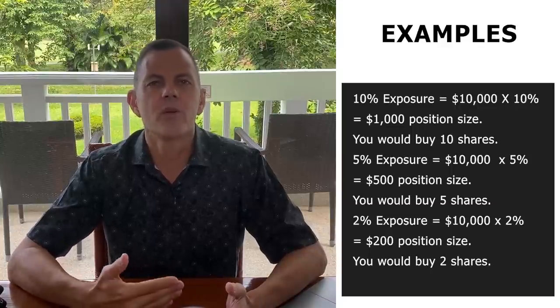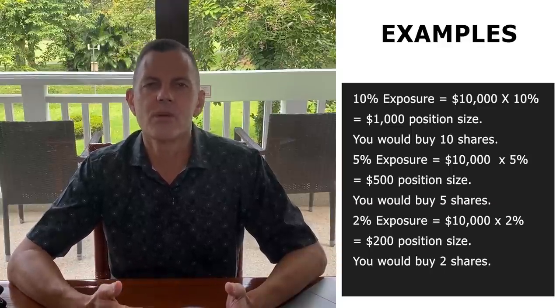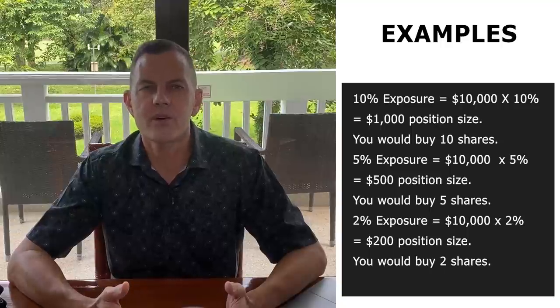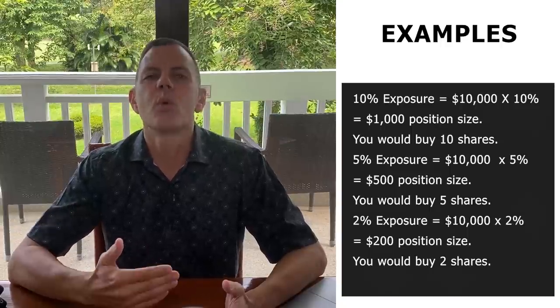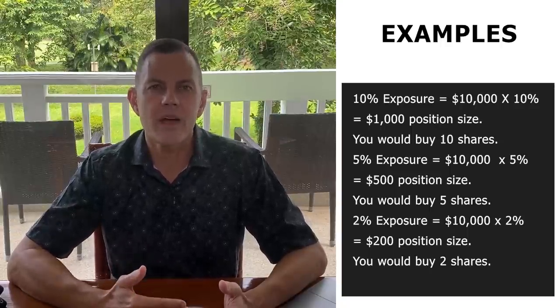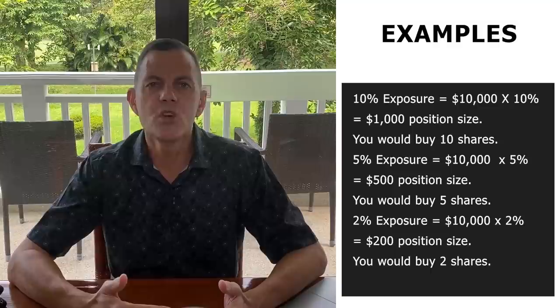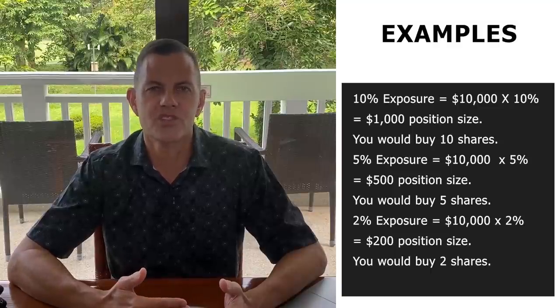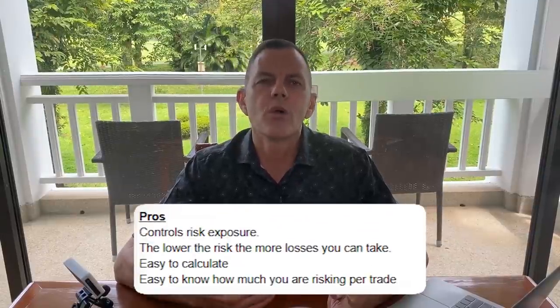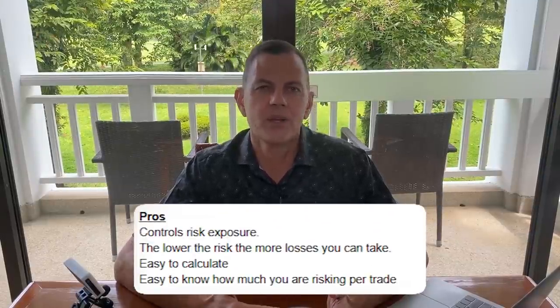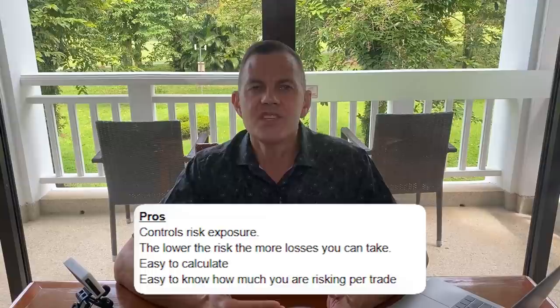For 5% exposure, that would be $10,000 × 5% = a $500 position size, and you would buy five shares. For 2% exposure, it would be $10,000 × 2% = a $200 position size, and you would buy two shares. The pros: this controls risk exposure — the lower the risk, the more losses you can take. It's easy to calculate, and it's easy to know how much you are risking per trade.